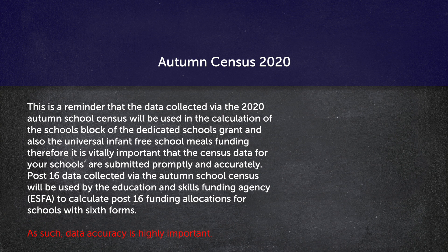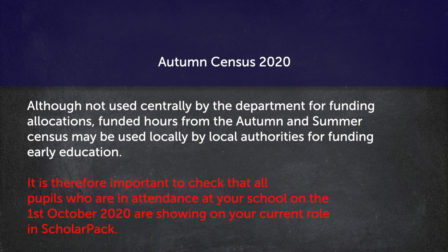Post-16 data collected via the autumn school census will be used by the Education and Skills Funding Agency to calculate post-16 funding allocations for schools with sixth forms. Data accuracy is highly important. Although not used centrally by the Department for funding allocations, funded hours from the autumn and summer census may be used locally by local authorities for funding early education. It is therefore important to check that all pupils who are in attendance at your school on the 1st of October 2020 are showing on your current roll in ScholarPAC.